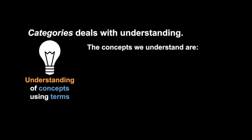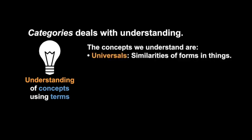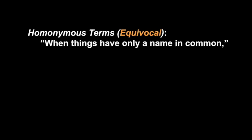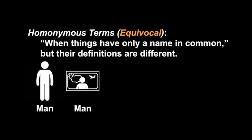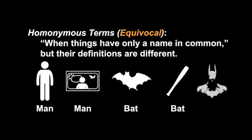The concepts that we understand are universals, which are similarities of forms in things. Forms are qualities. Homonymous terms, or equivocal terms, are, as Aristotle says, when things have only a name in common but the definitions are different. For example, an actual man and a picture of a man—we might say 'that's a man.' Or a bat, a bat, and a bat.